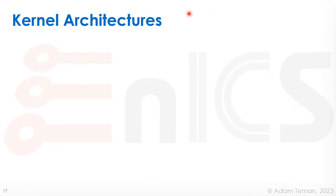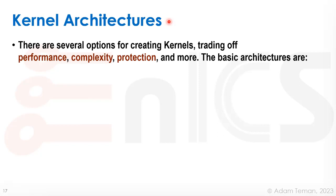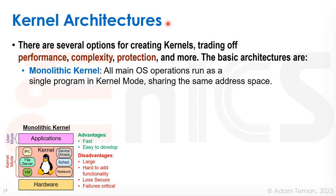Now let's move to something more abstract: kernel architectures. There are several options for creating kernels that trade off performance, complexity, protection, and more. The original architecture is the monolithic kernel. In the monolithic kernel, we have hardware at the bottom and applications at the top. Applications run in user mode, and everything the operating system does runs in kernel mode — providing inter-process communication, file servers, virtual memory, device drivers, scheduling, networking, etc. This is how Linux is built.